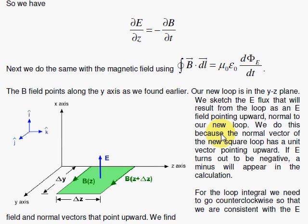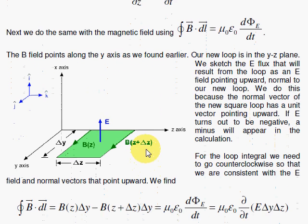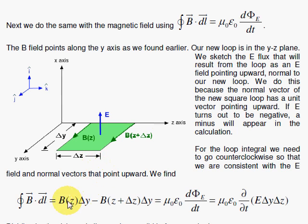And before we had Lenz's law, we had to put a minus sign in, but here we don't have the minus sign. So we're all set, ready to go, and when we do this loop, we have the B z here, we're going counterclockwise. So B z lines up with delta y, and then we fight the B z plus delta z going the opposite way. So that's the minus sign, delta y, and that's equal to then the change of the E flux here, which is E times your delta y, delta z.